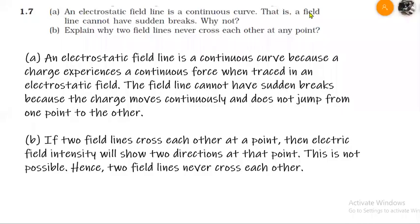Since the electric field is a vector quantity, having two directions at the same point is not possible. This is a contradiction, so two field lines can never cross each other at any point. That is the answer.